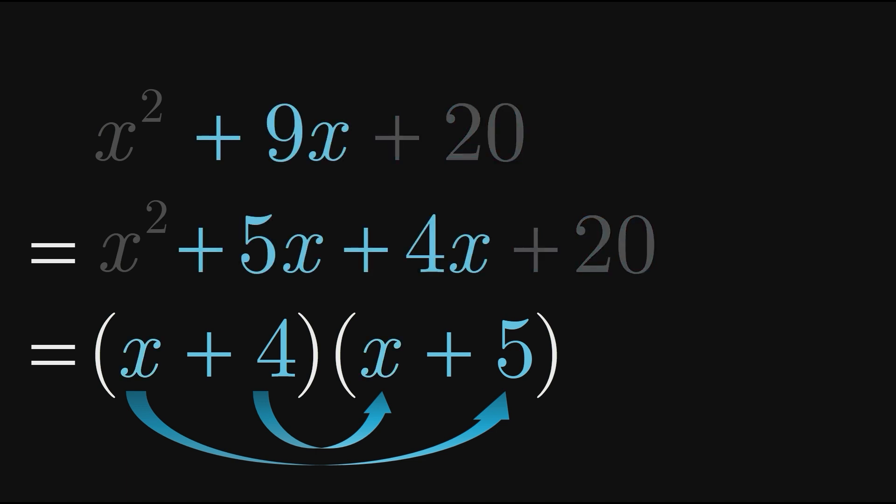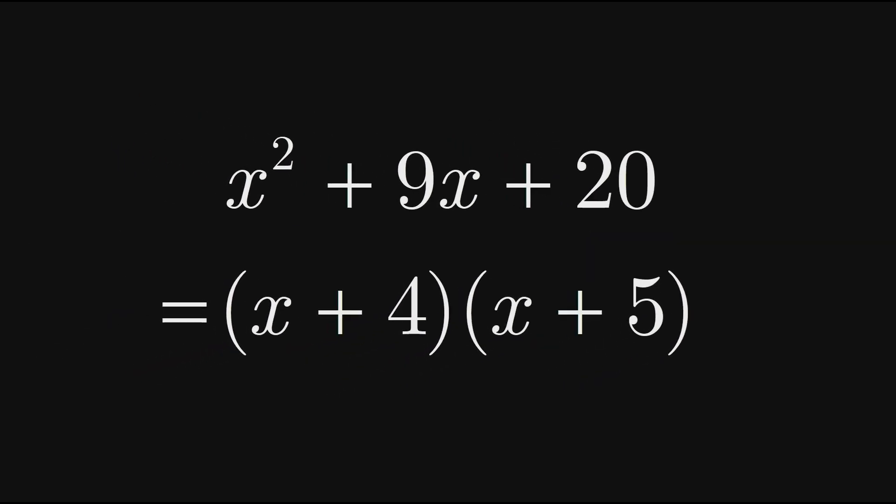So, in addition to multiplying to 20, these two values must also add to 9. Therefore, when factoring x squared plus 9x plus 20, we know that each factor must have an x term, and the constant terms in the two factors must multiply to 20 and add to 9.